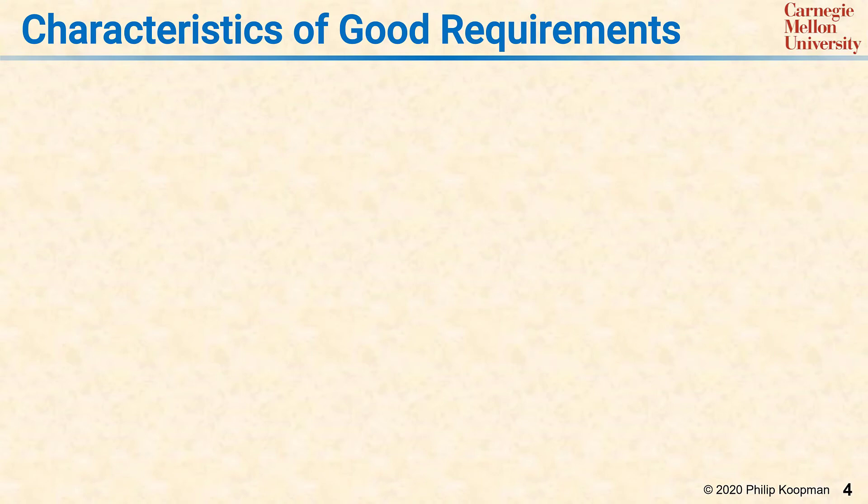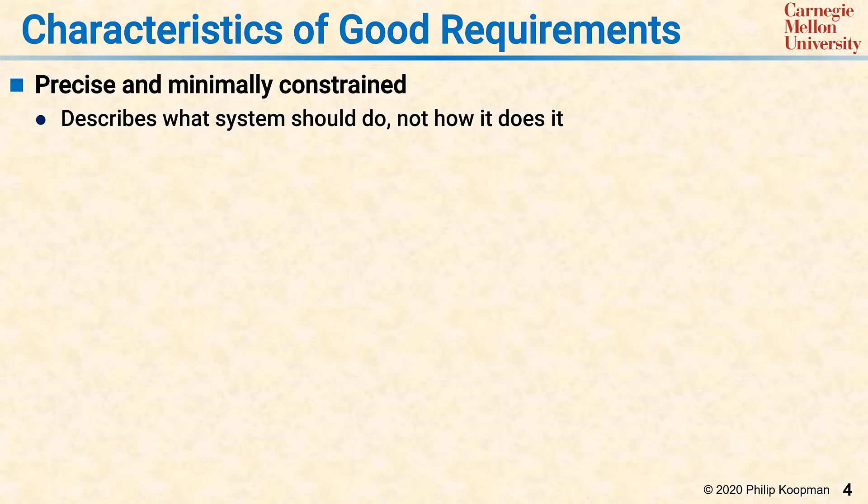Good requirements tend to have some common characteristics. An important attribute of good requirements is that they are both precise and minimally constrained. By minimally constrained, we mean that they describe what the system should do, but not how the system does it.